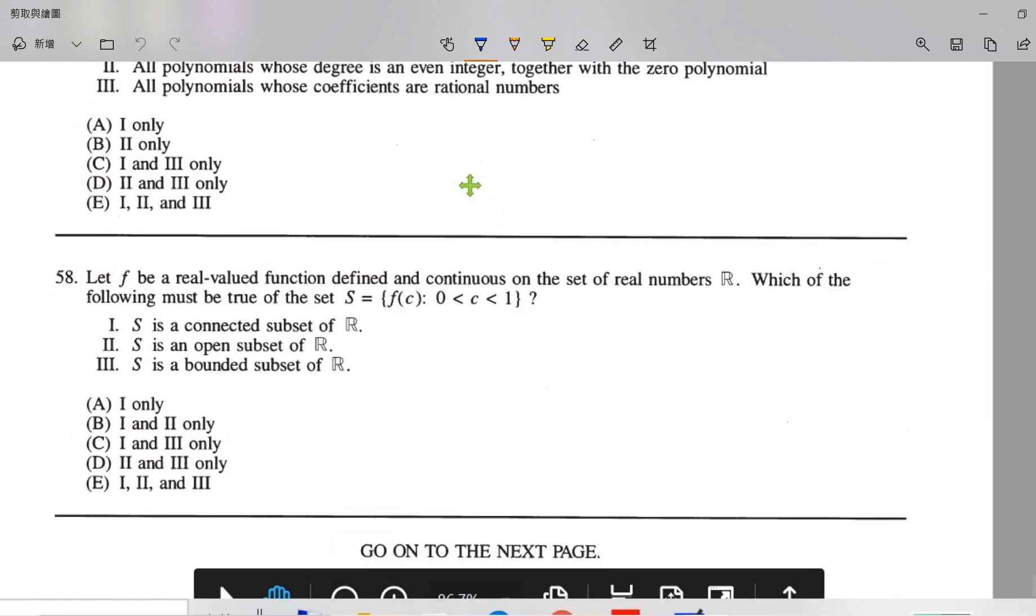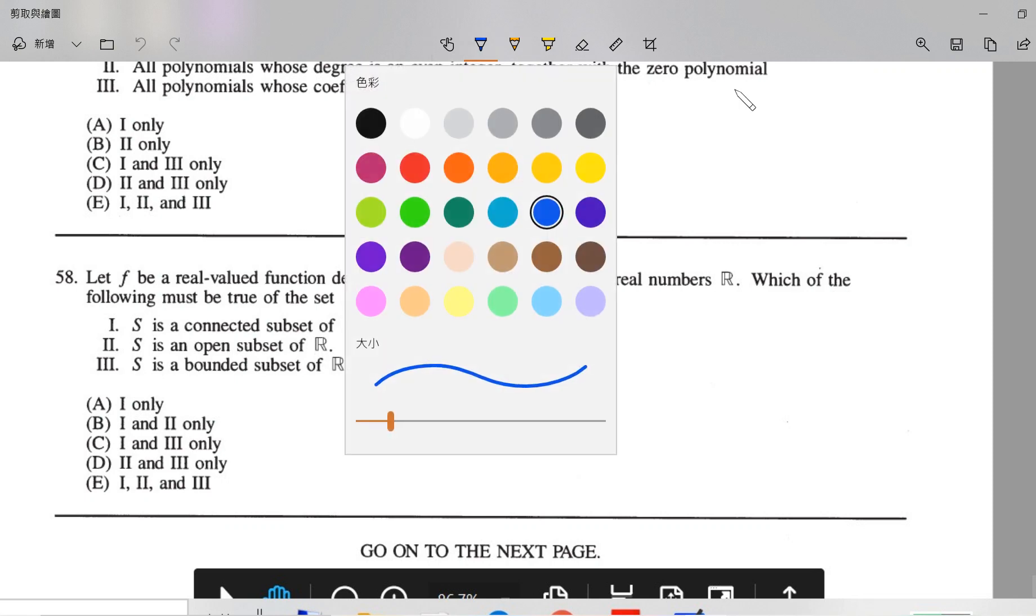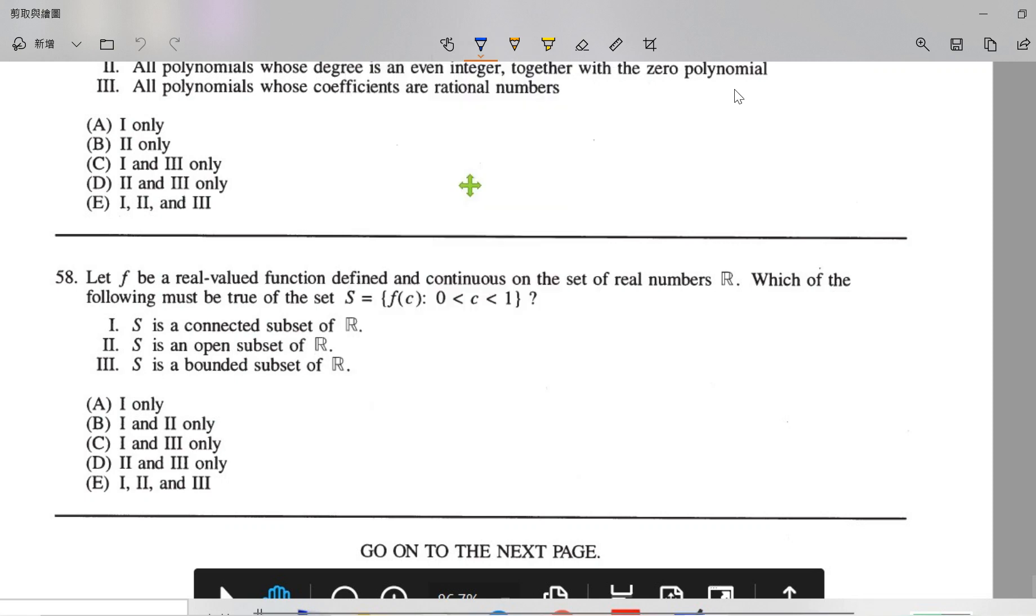Okay, so let f be a real function defined and continuous on the set of all real numbers. So this is the condition. So basically f is from R to R continuous, and we're asking about this set.